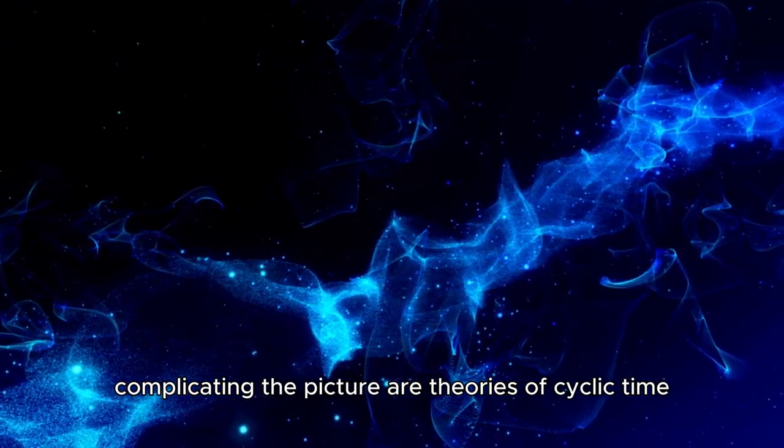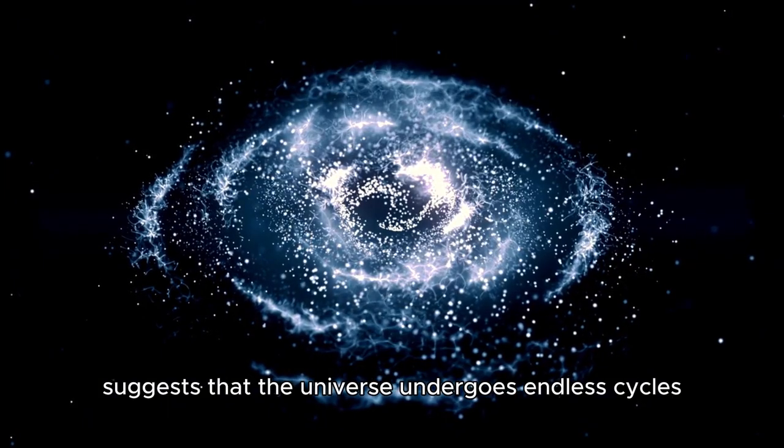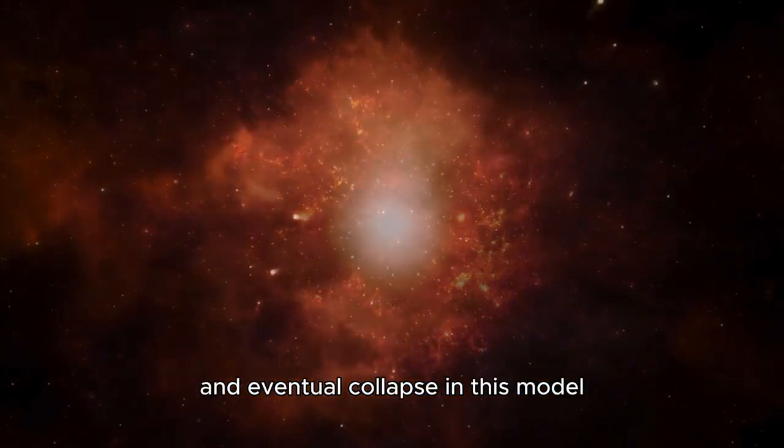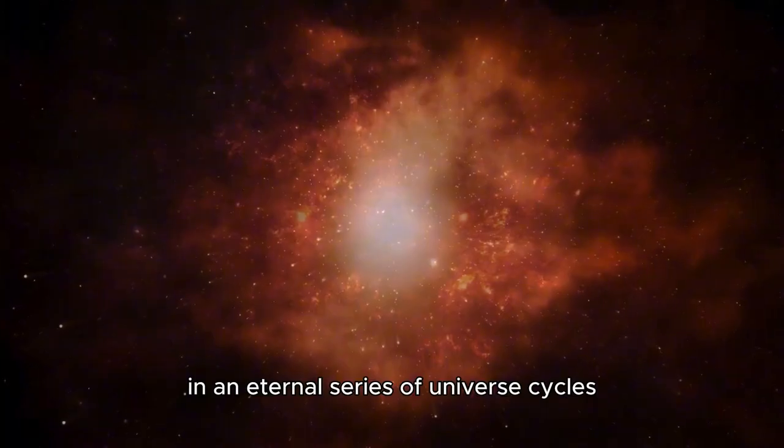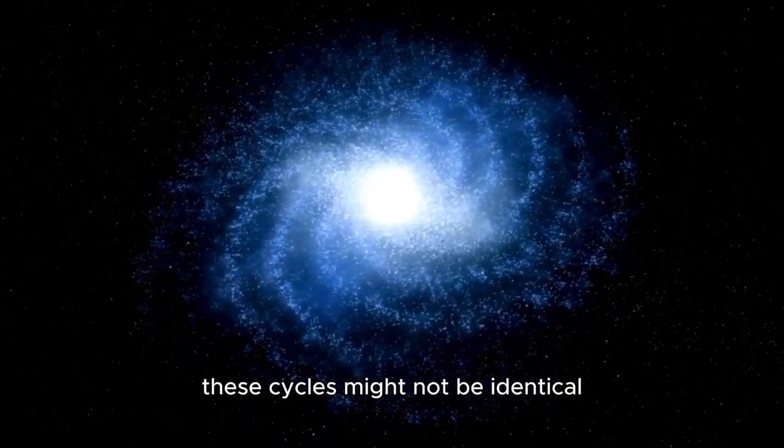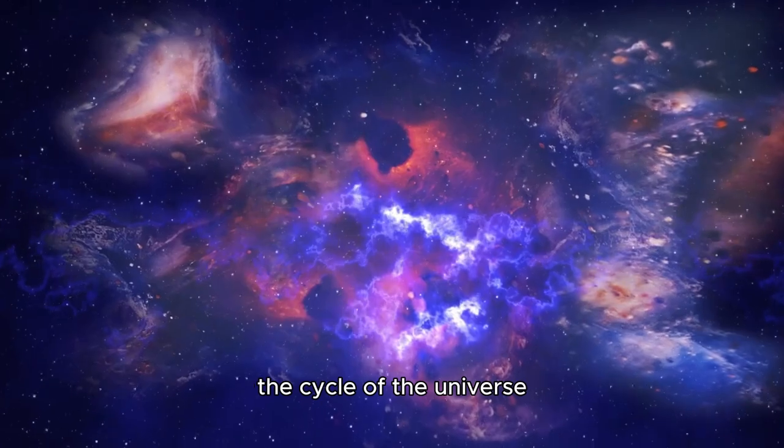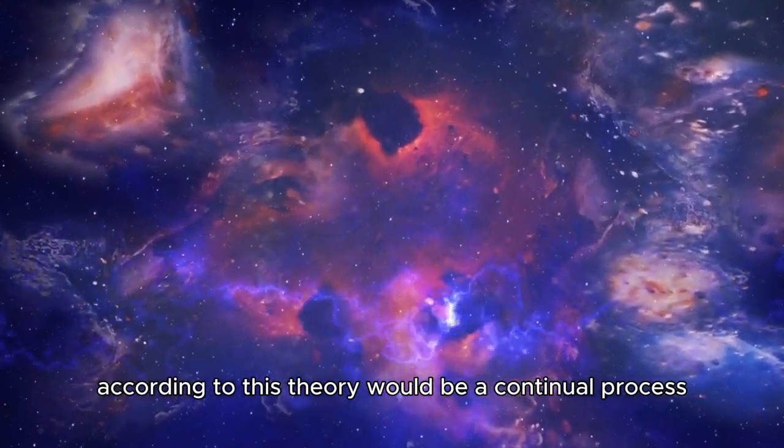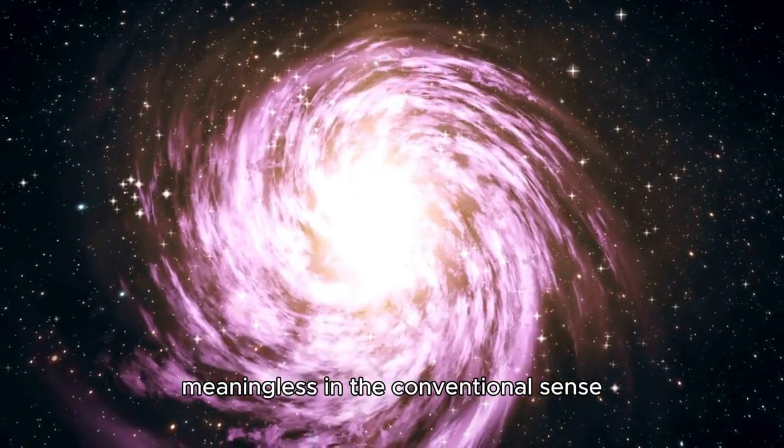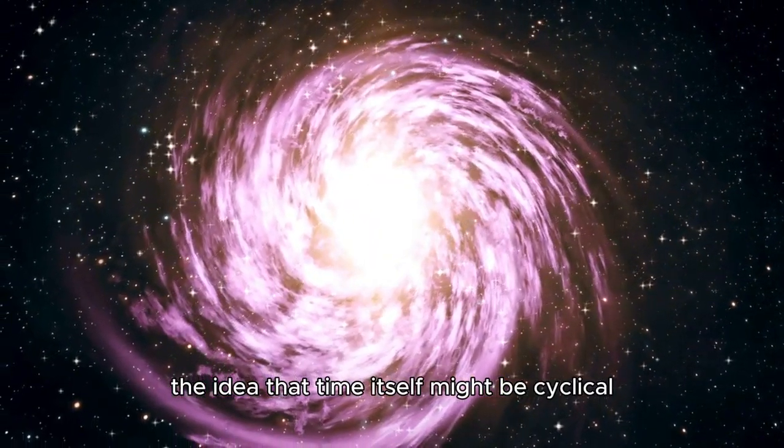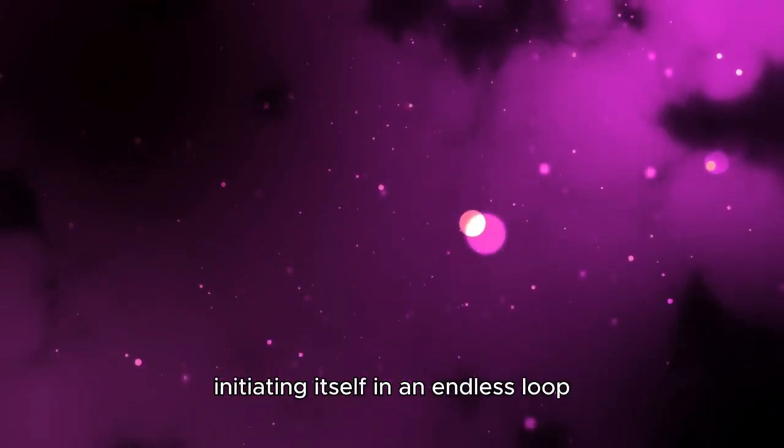Further complicating the picture are theories of cyclic time. As mentioned previously, cyclic cosmology suggests that the universe undergoes endless cycles of birth, evolution, and eventual collapse. In this model, the Big Bang could represent just the most recent bounce in an eternal series of universe cycles. These cycles might not be identical, but could evolve in different directions, each with unique physical properties. The idea that time itself might be cyclical suggests that every Big Bang could be followed by a contraction and another big crunch, with the universe re-initiating itself in an endless loop.